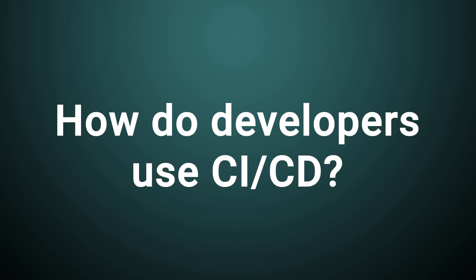So how do developers use CI and CD? Developers use CI-CD to automate their workflow, reduce errors, and improve the overall quality of the software. The use of automation tools in the CI-CD pipeline enables developers to focus on writing code, testing features, and fixing bugs. CI-CD allows developers to catch errors early in the development cycle, reducing the cost and time required to fix them.